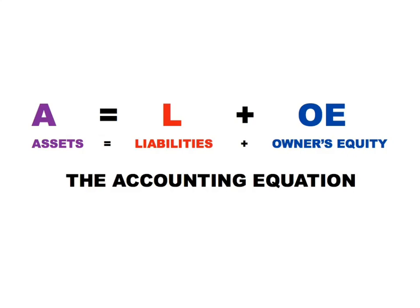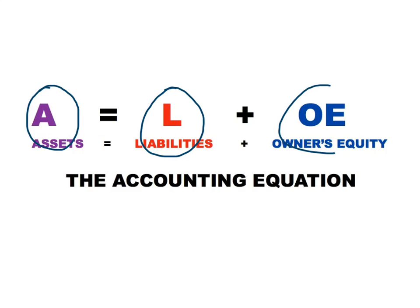To understand why this is in balance, we'll briefly look at some of these terms. Assets are things which the business owns which are of value to them. Liabilities is money that comes from outside of the business which must be paid back. And owner's equity is money put into the business by the owners — this money does not have to be paid back.